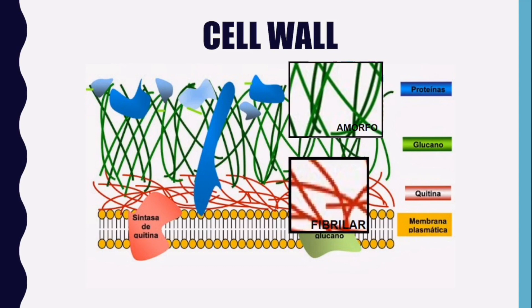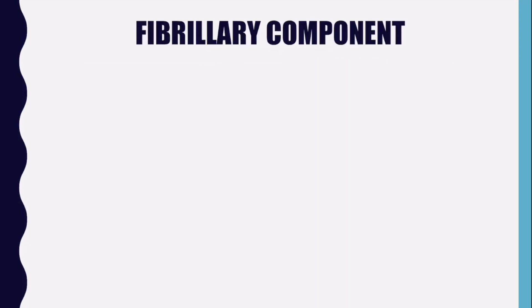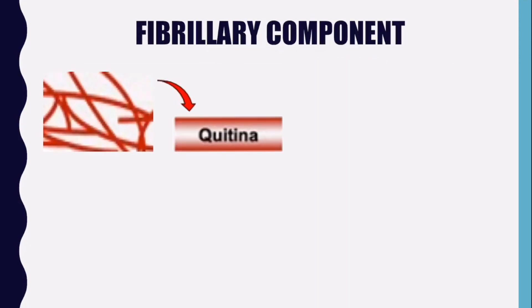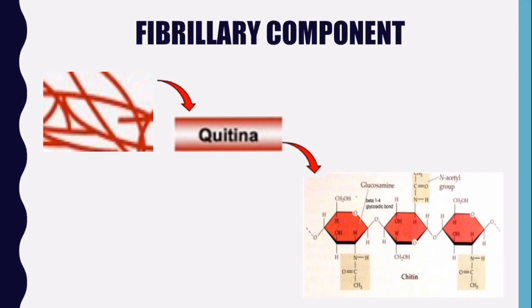The main fibular element of the fungal cell wall is chitin, while the amorphous layer is made up of glucans. Chitin is a polysaccharide made from chains of N-acetylglucosamine put together by beta-1-3 and beta-1-6 bonds.